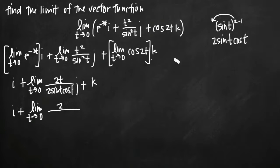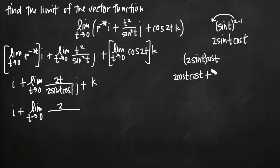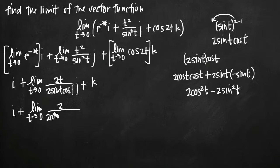In the numerator we get 2, because the derivative of 2t is just 2. In the denominator we need to use the product rule on 2 sine t cosine t, treating 2 sine t as one function and cosine t as the second. The derivative of 2 sine t is 2 cosine t, multiplied by cosine t, plus 2 sine t multiplied by the derivative of cosine t, which is negative sine t. Simplifying, we get 2 cosine squared t minus 2 sine squared t.